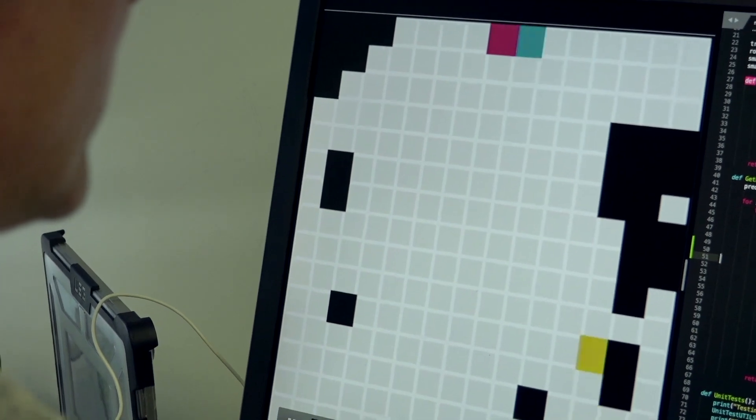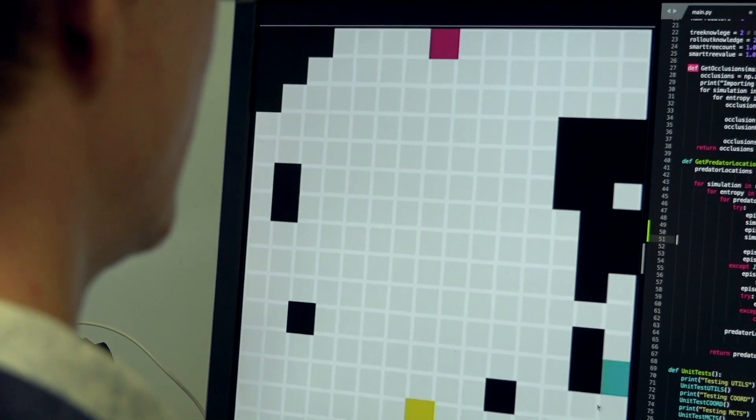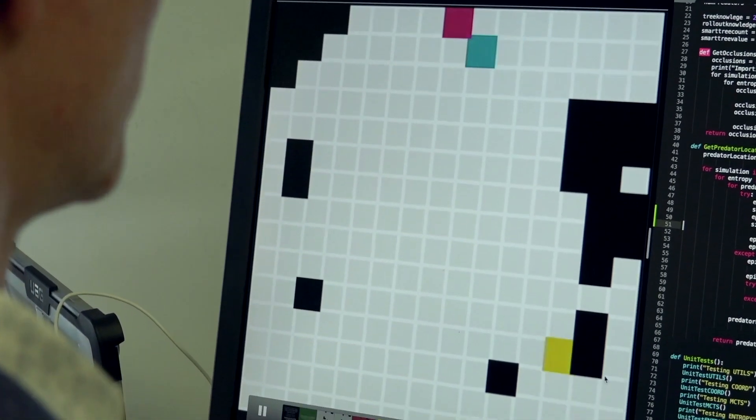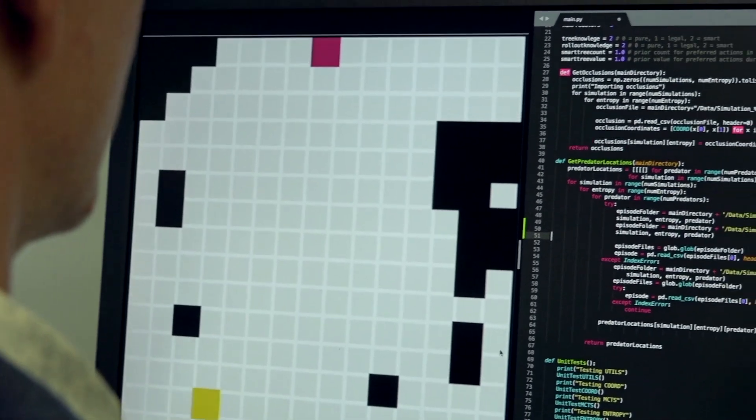It's luring the predator into this cul-de-sac. That's what it's doing, it's exploiting the fact that the predator is going to chase it. So our computational experiments show two things.